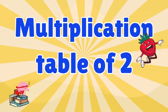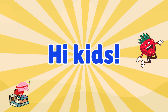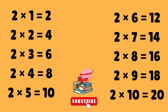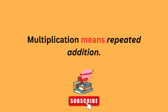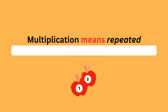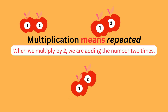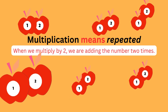Multiplication table of 2. Hi kids, today we're going to learn something super cool: the multiplication table of 2. Are you ready? Let's go. Multiplication means repeated addition. When we multiply by 2, we are adding the number 2 times. Let's see how it works with apples.